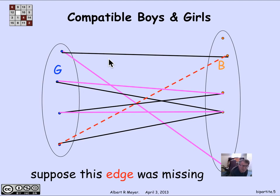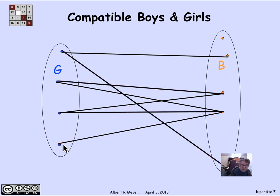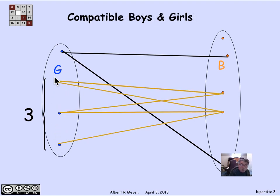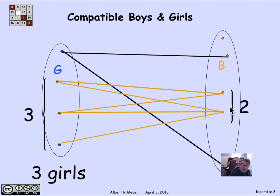Let's look at a case where we can't find a match. Suppose that one edge was missing — we used that edge in the match, but let's suppose it was not there. What we find now is that this last girl can no longer be matched to this second boy, which is what we previously had. So let's try to find some other match — and there isn't any. The reason is that if you look at this group of three girls on the left, and all of the boys on the right that they are collectively compatible with, there are only two boys that have to be shared among three girls. That is an example of what's called a bottleneck.